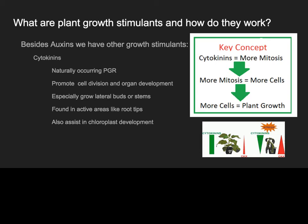The last growth stimulator is cytokinins. The key concept here is that to get a plant to grow, you need to generate more cells, which requires mitosis. Cytokinins are naturally occurring in the plant and will promote cell division — i.e., mitosis. They also produce organ development and especially grow lateral buds, which are branches going off laterally or horizontally on the plant, as well as stems which grow vertically. They are found in very active areas like the apical areas — the top of stems and tips of roots. Importantly, they can also assist with chloroplast development, which are the major functioning parts of a plant for photosynthesis.